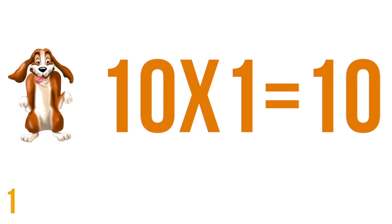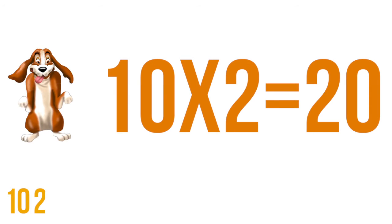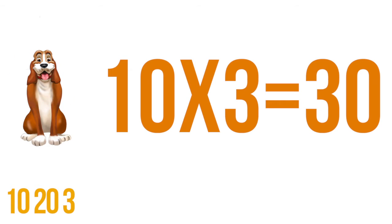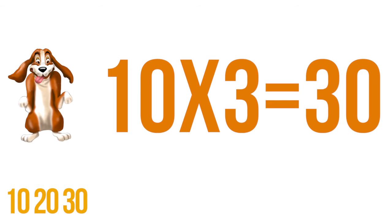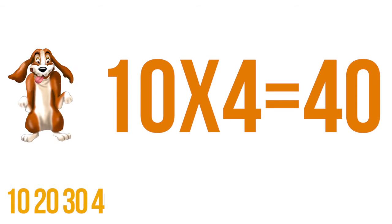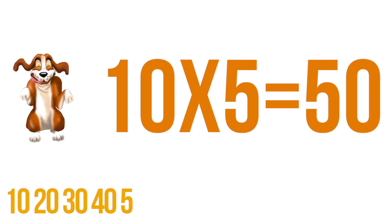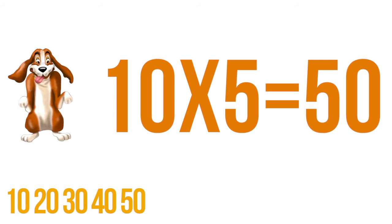Multiply by 10. 10 times 1 is 10. 10 times 2 is 20. 10 times 3 is 30. 10 times 4 is 40. 10 times 5 is 50.